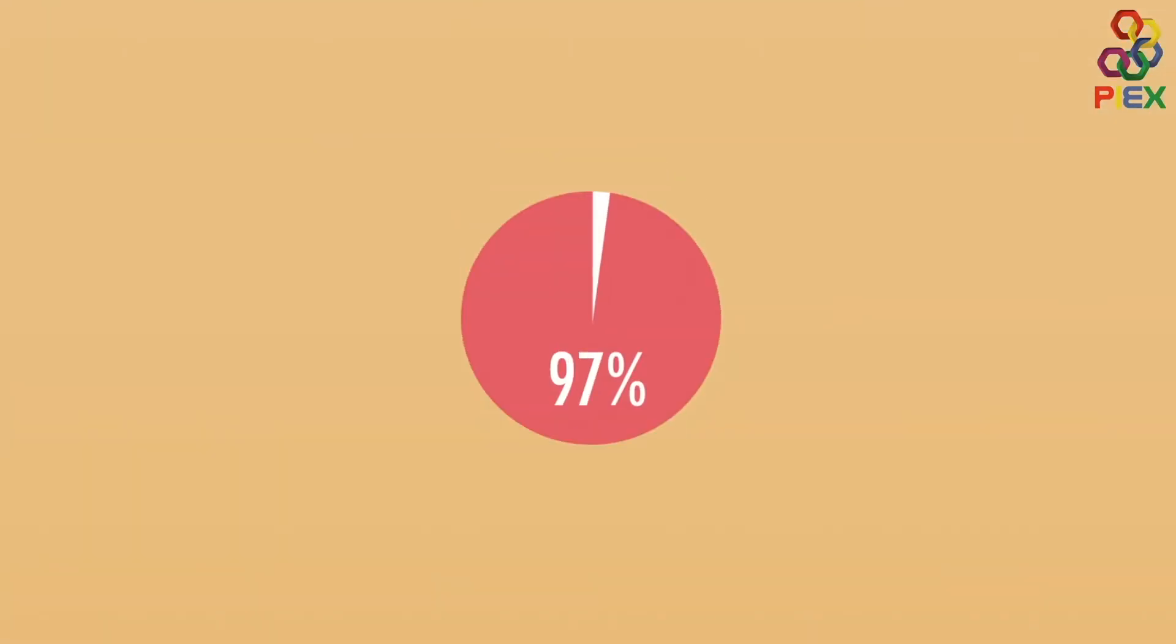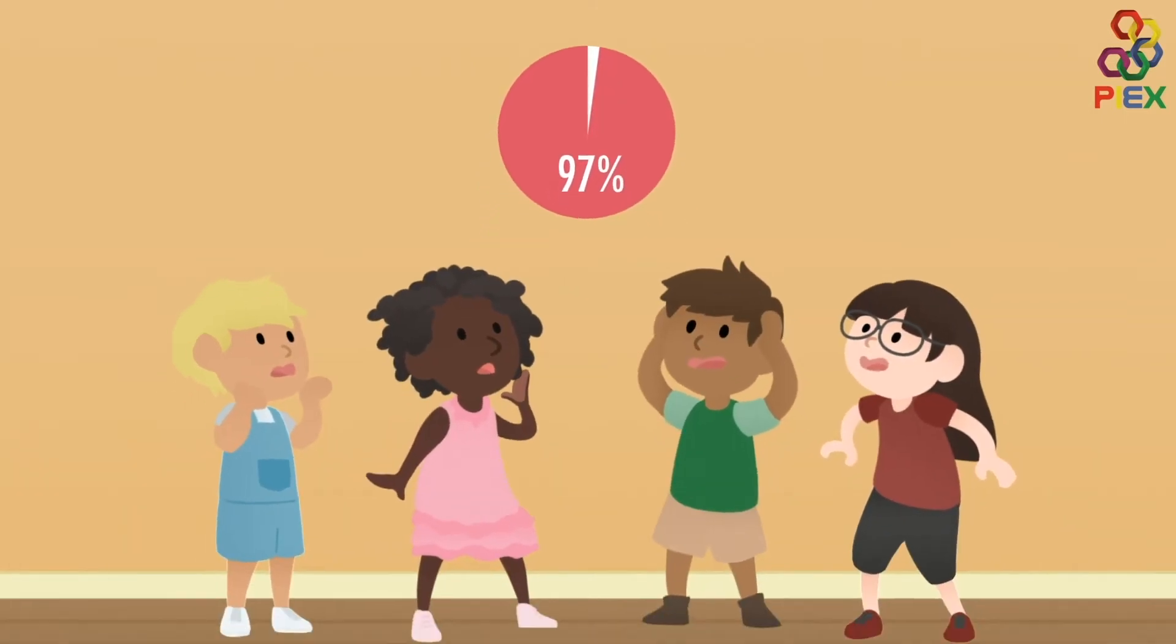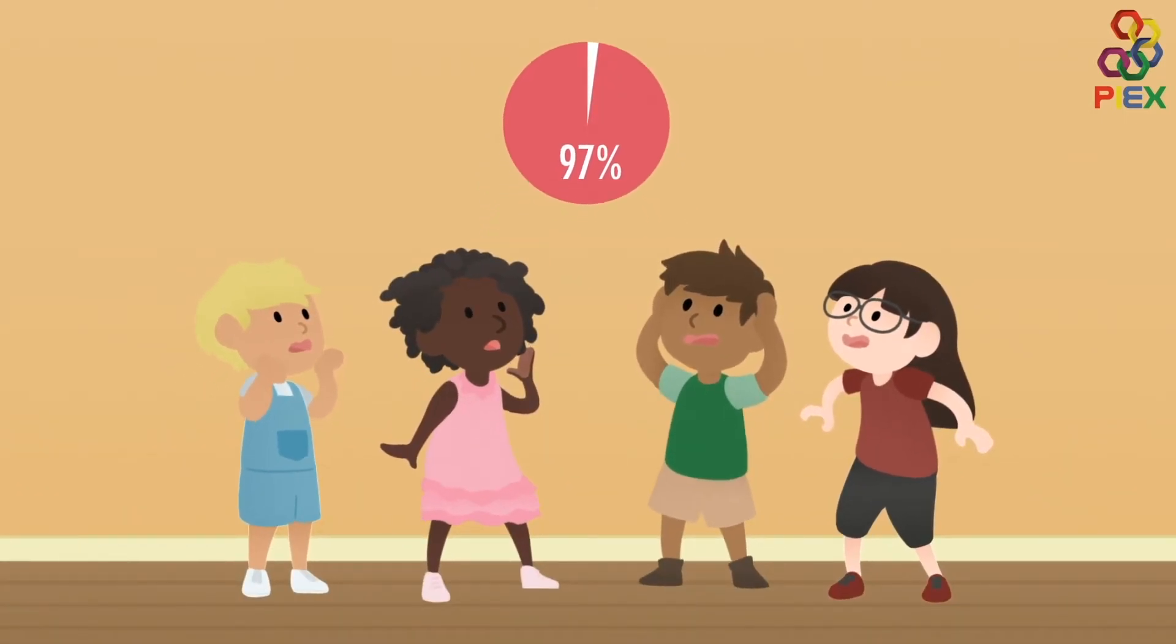Worst of all, plastic by-products were found in 97% of blood and urine samples from 2,500 children tested between 2014 and 2017.